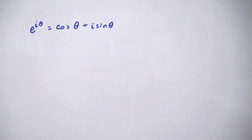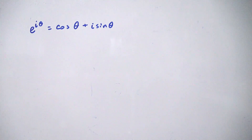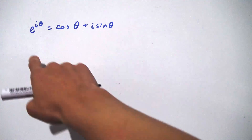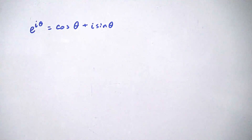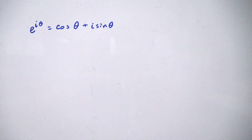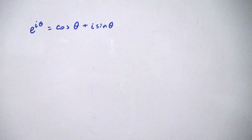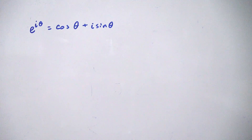Hello everybody. Today we're going to be proving the double angle identities for cosine and sine using Euler's formula. In fact, we're going to kill two birds with one stone because we're going to use this formula right here to derive both of those identities. So let's just get started.